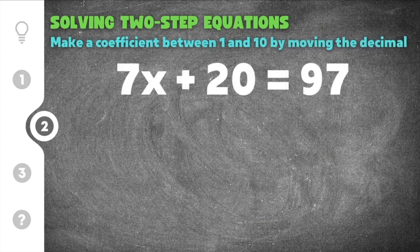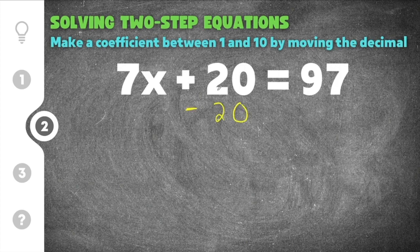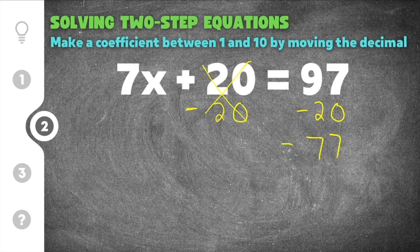Moving on to number 2. This problem gives us 7x plus 20 equals 97. We're still trying to get x equals a number — x on one side and a number on the other. The first thing we need to do is get rid of the plus 20, so we subtract 20 because the opposite of plus 20 is minus 20. These cancel, and we do minus 20 on the other side as well. 97 minus 20 is 77, and the 7x comes straight down unchanged.